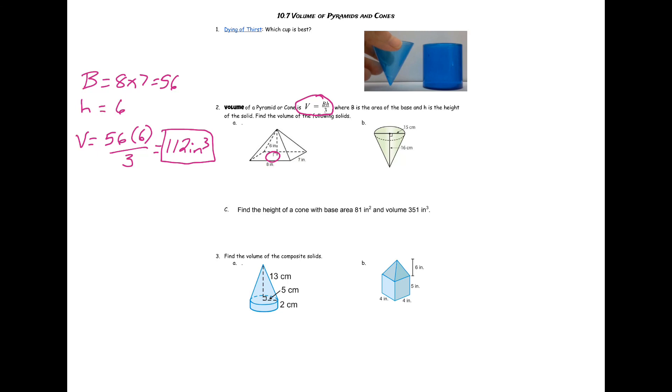Now it is really important that you know the height of the pyramid is the height that makes a right angle here. So you may see on some pictures that you have the height of the face, the triangular face, and we'll talk about that more tomorrow. But that is not considered the height of the pyramid or the cone for that matter.